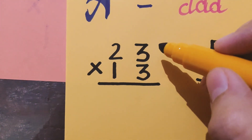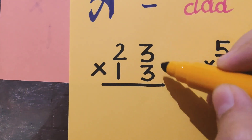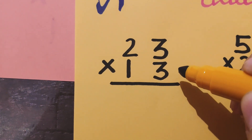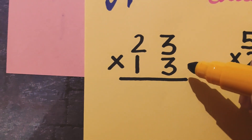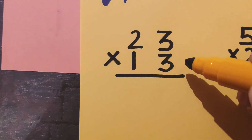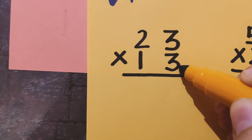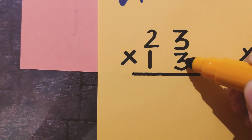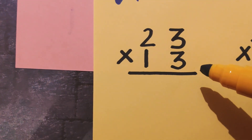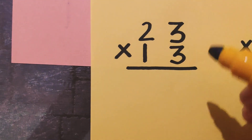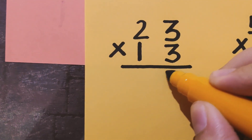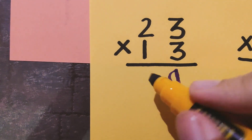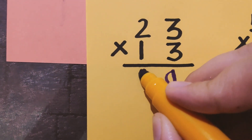The first example is 23 × 13. Recall the first step — M, multiply with the ones digit. The ones digit is 3, so you multiply 3 with 3 and then with 2. Let's start: 3 times 3 is 9, and 3 times 2 is 6.